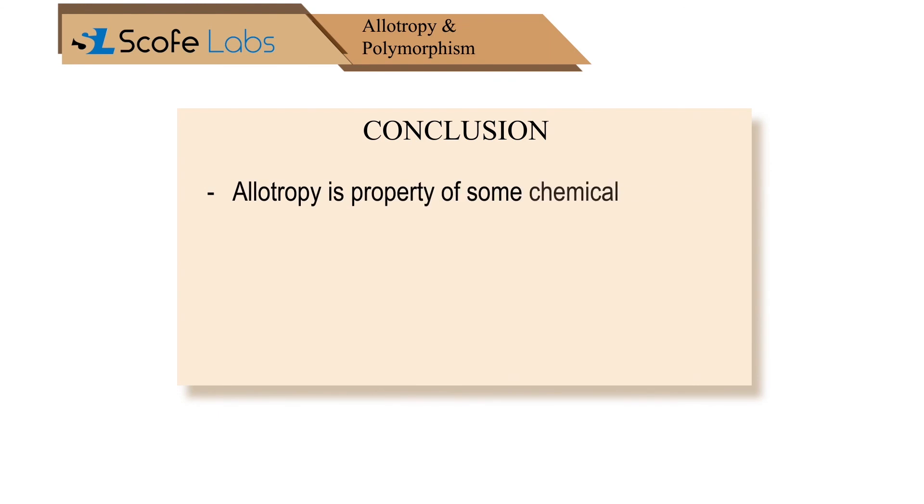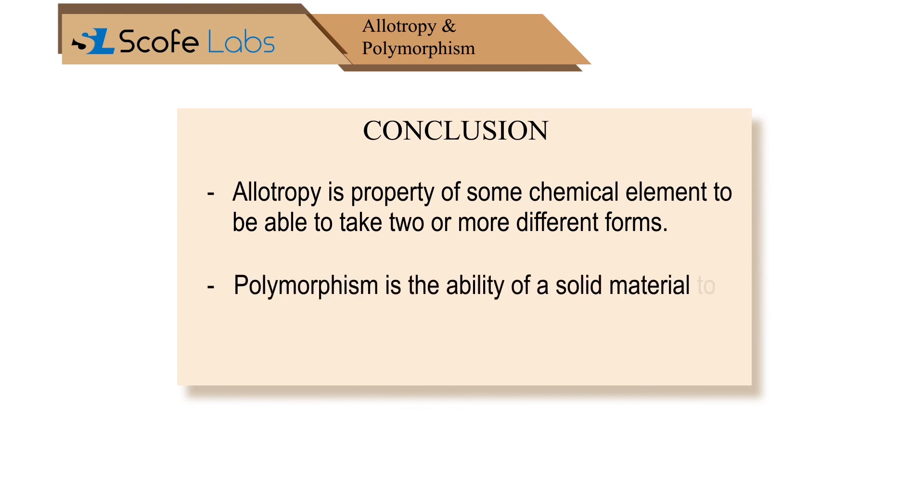Allotropy is the property of some chemical elements to be able to take two or more different forms. Polymorphism is the ability of a solid material to exist in two or more forms or crystalline structures of the same chemical compound.